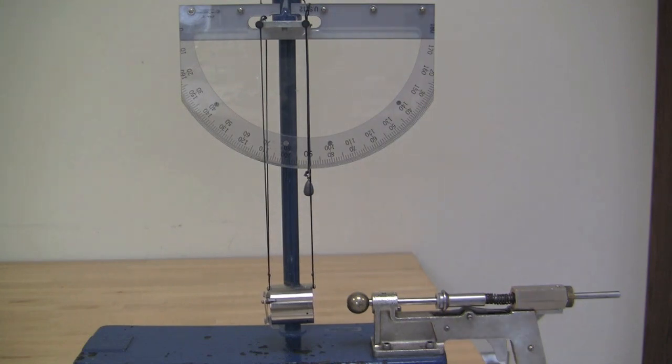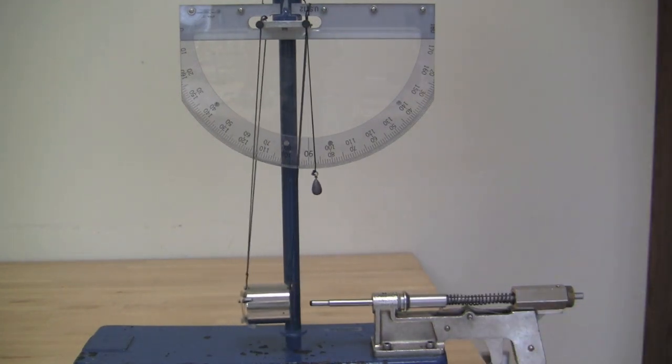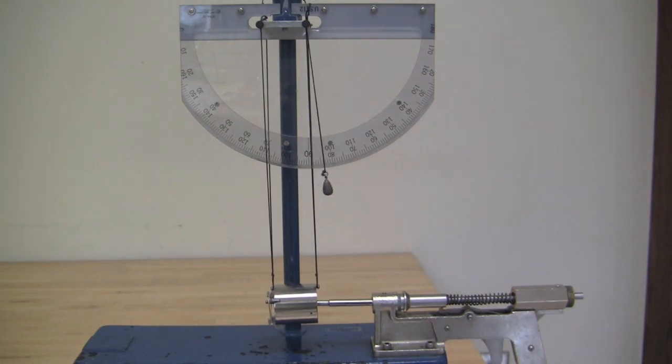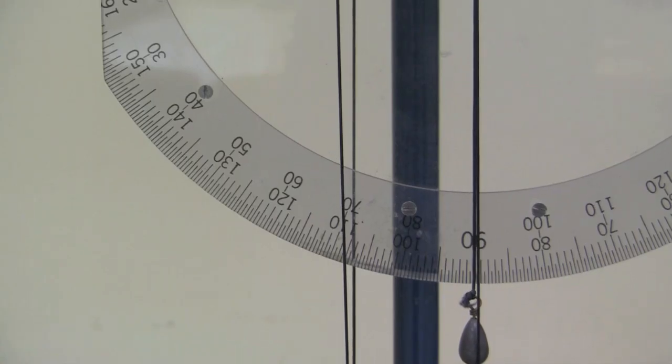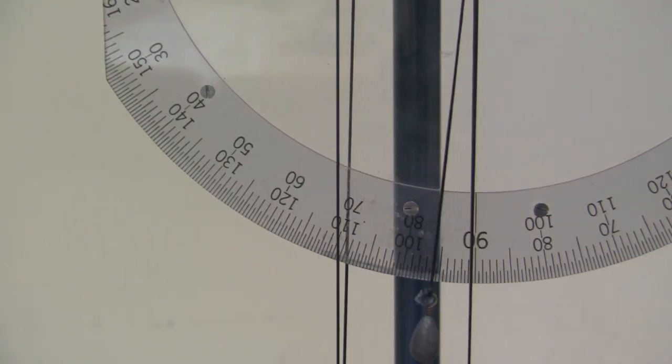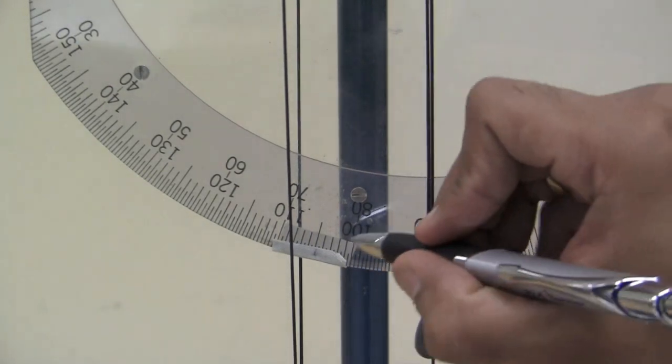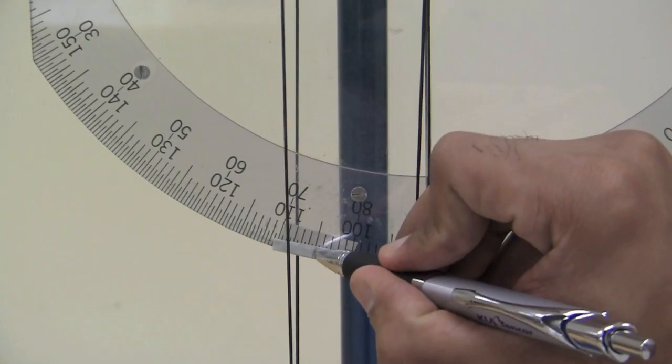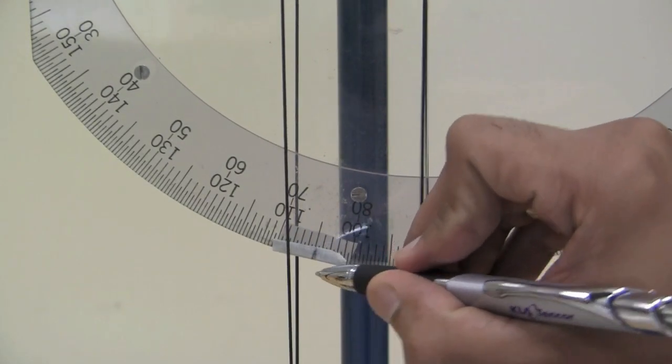Record the maximum angular deflection of the pendulum. Find an approximate theta and then make a masking tape slit on the back of the protractor at this approximate value of theta, so that your eyes can locate the proper viewing area to find a more accurate value of the angle on subsequent firings.